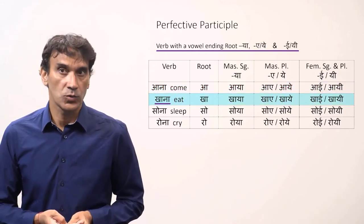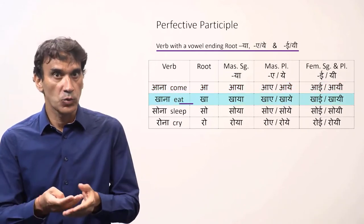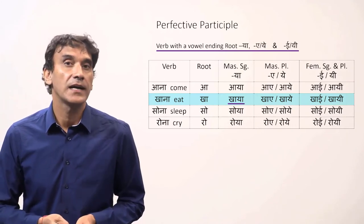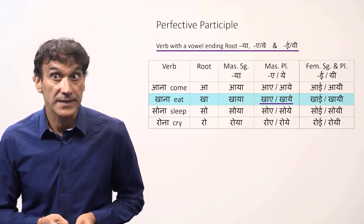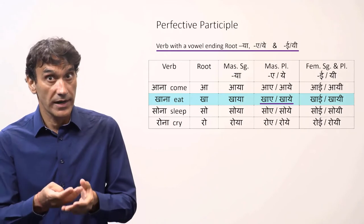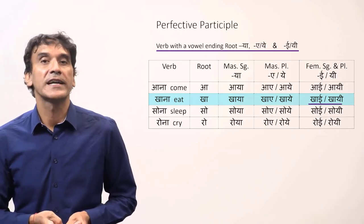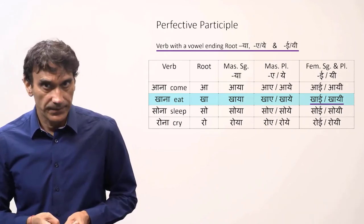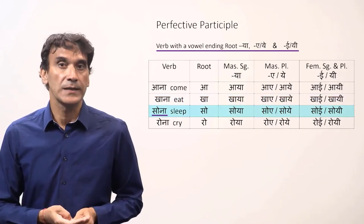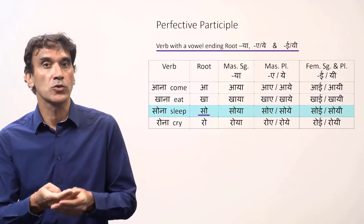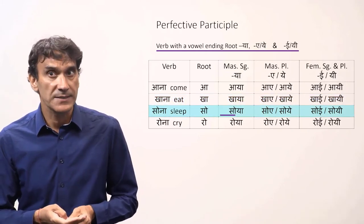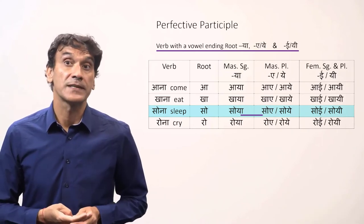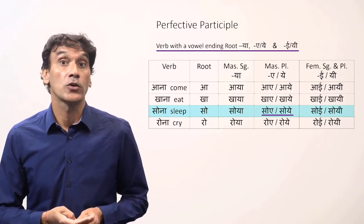The next verb is khana, to eat. The root is khaa. The masculine singular participle is khaya. The masculine plural participle is khaye or khaye. And the feminine singular and plural participle are khai or khai. The next verb is sona, to sleep. The root is 'so'. The masculine singular participle is soya. The masculine plural participle is soye or soye.